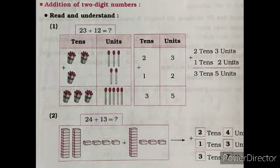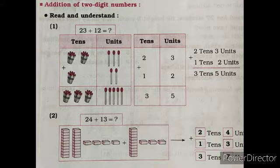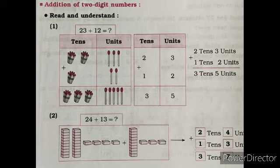Now children, addition of 2-digit numbers. 23 plus 12. We can say 23 is 2 tens and 3 units, so write 2 in the tens place and 3 in the units place. Now 12 is 1 ten and 2 units. In this picture you are observing 2 groups of tens and 3 single units, and in 12 there is 1 group of ten and 2 single units. So write 3 and 2 in the unit place, and 2 plus 1 in the tens place. Write it properly: 23 plus 12.